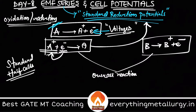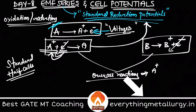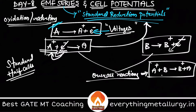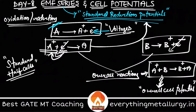These two half reactions on combination give me the overall reaction. If you add them, the electrons on either side cancel, and the overall reaction is: A⁺ + B gives rise to B⁺ + A. The overall voltage from this reaction is called the overall cell potential. Half reactions are not sufficient to study individually, so for that reason we usually use something called the standard hydrogen electrode.